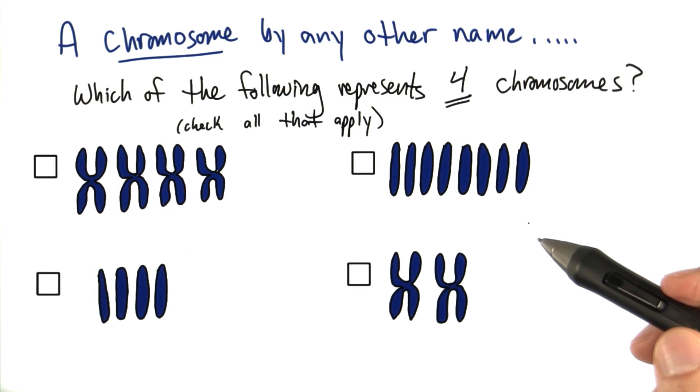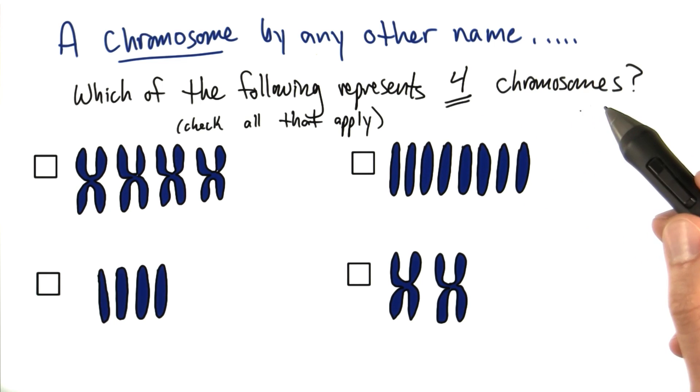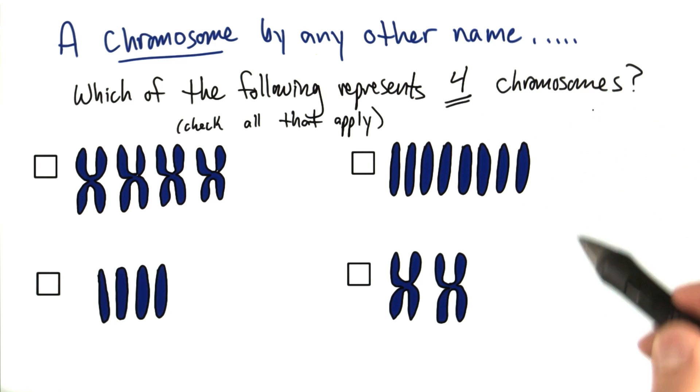Now I want you to tell me, of the following four groupings of chromosomes, which of the following represents four chromosomes? Either duplicated or non-duplicated. Pick which ones represent four chromosomes. There can be multiple answers or there may not. So I want you to check all the boxes that you think apply.